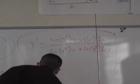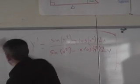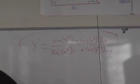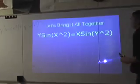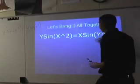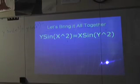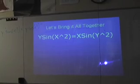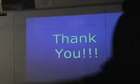Now that we have the answer, we've completed the concept for today: finding the derivative using trigonometry on a complex problem, dividing it into two sections — first and second — bringing them back together, using implicit differentiation, and arriving at the final answer. Thank you.